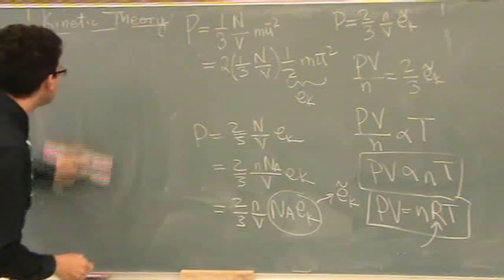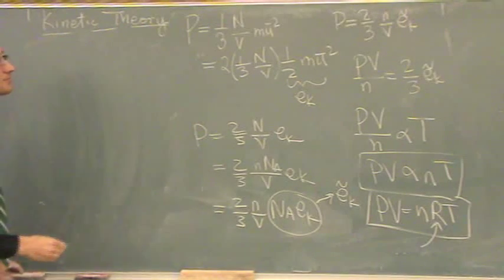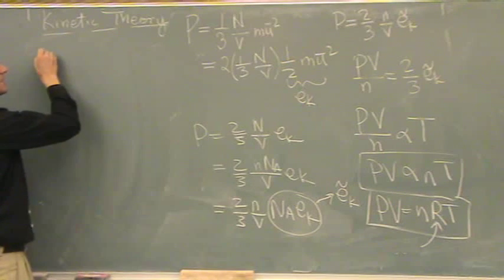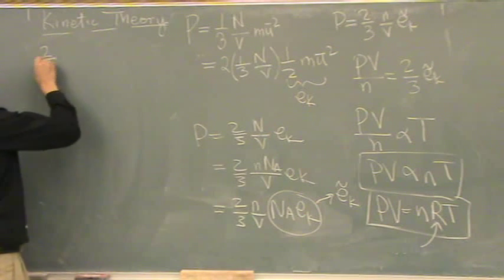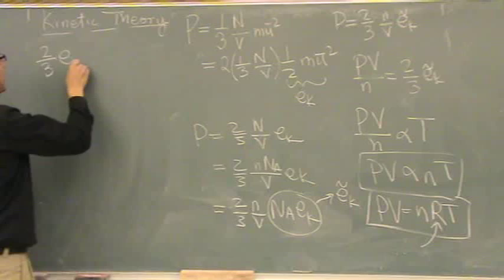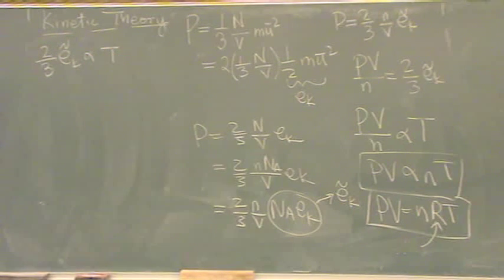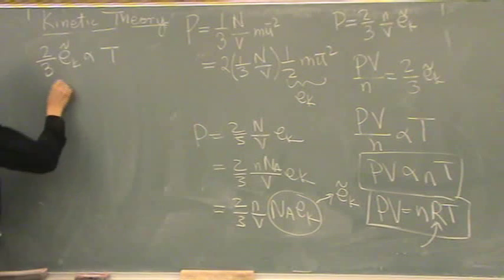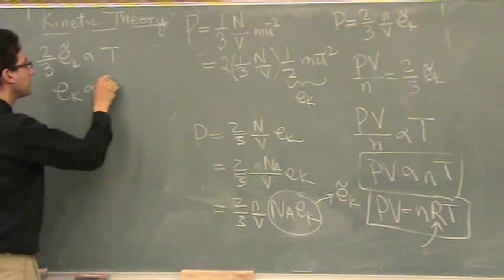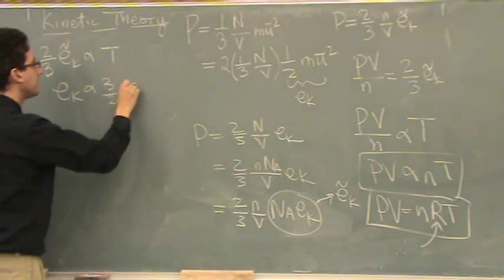That was the left-hand side. The right-hand side, we know that two-thirds EK squiggly is proportional to temperature. That side is also proportional to temperature. If I move this around, EK is proportional to three-halves T.